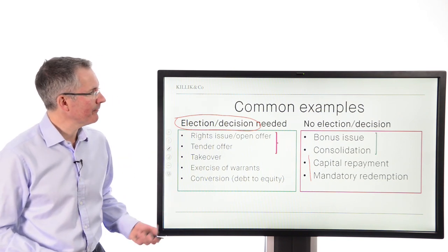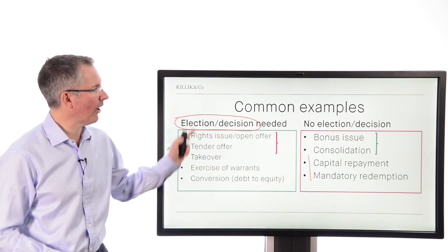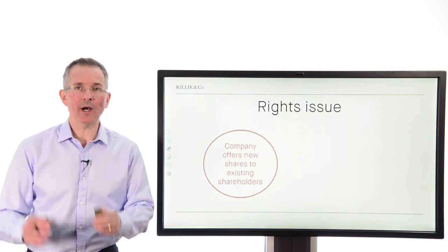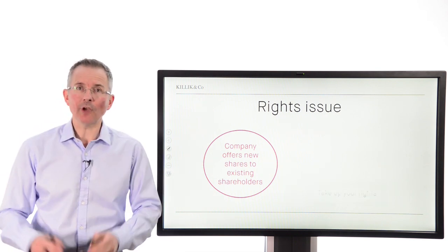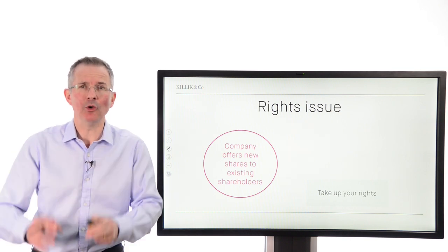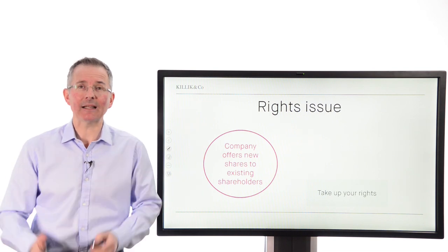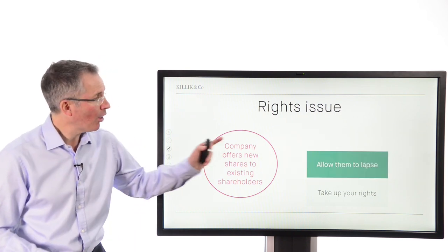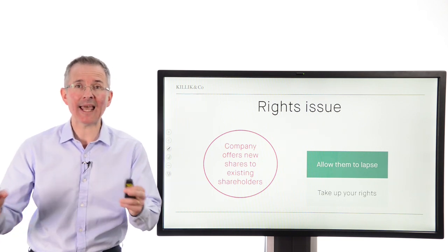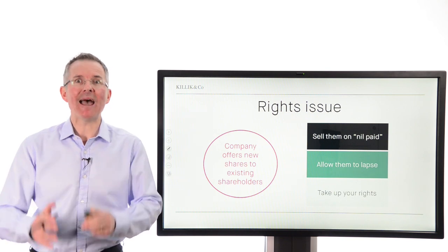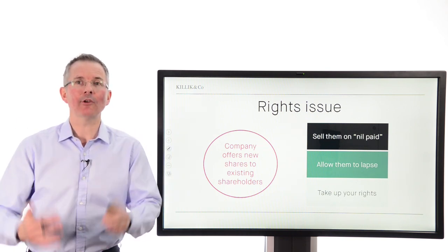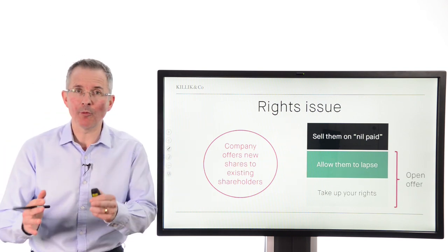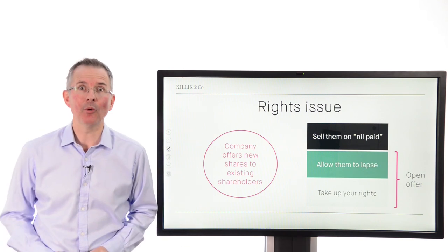Starting with the rights issue. A company offers new shares to its existing shareholders, normally at a discount to the current market price because the company wants you to buy them. You get a letter with choices: you can take up your rights by putting your hand in your pocket and buying the shares at a discount; you can allow your rights to lapse and simply ignore the letter; or you might be able to sell them on nil paid — selling your right to buy the shares to somebody else for cash. Note there is a similar corporate action called an open offer, where that third option disappears.